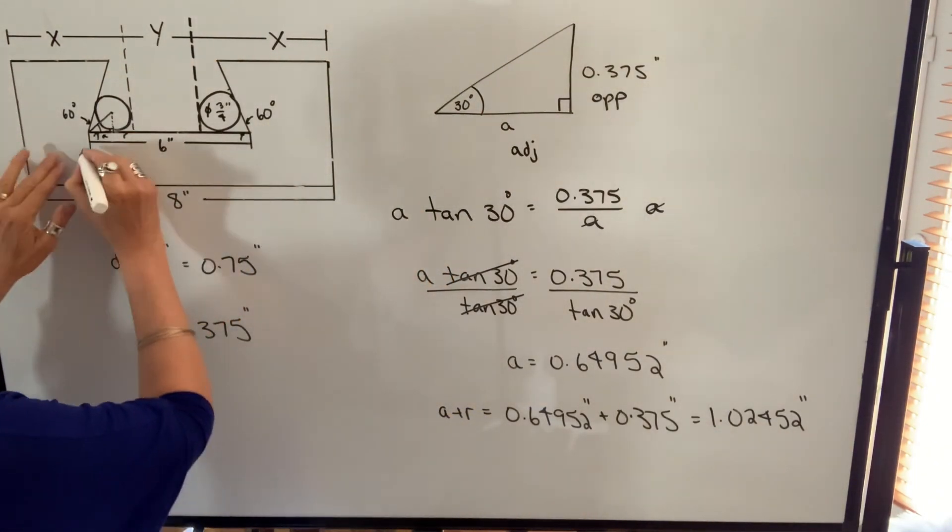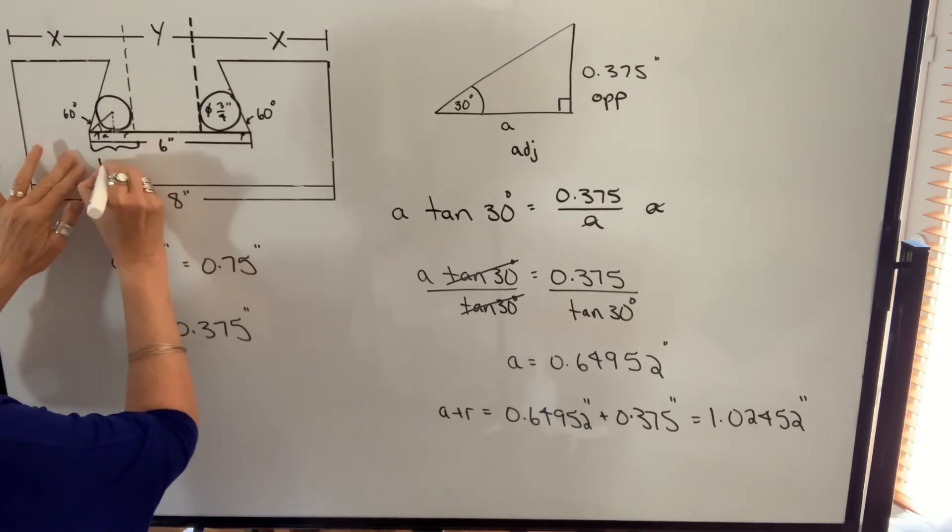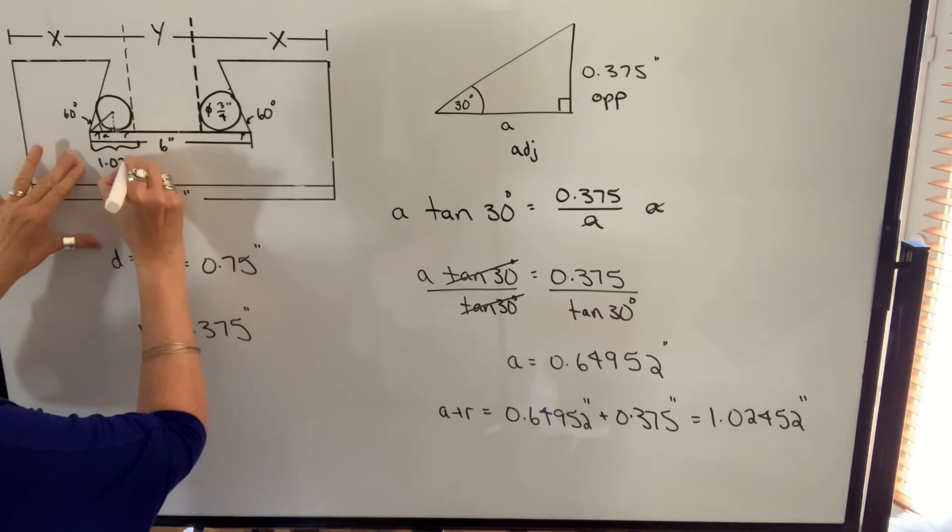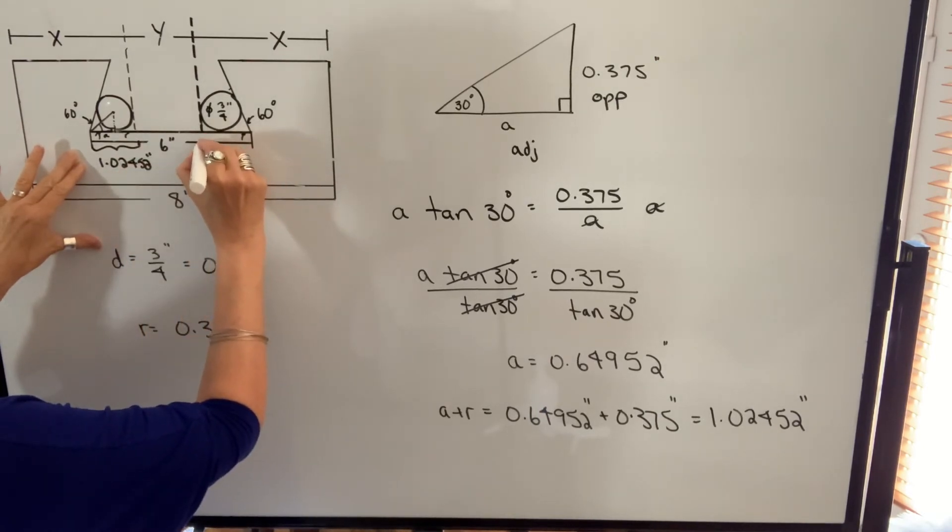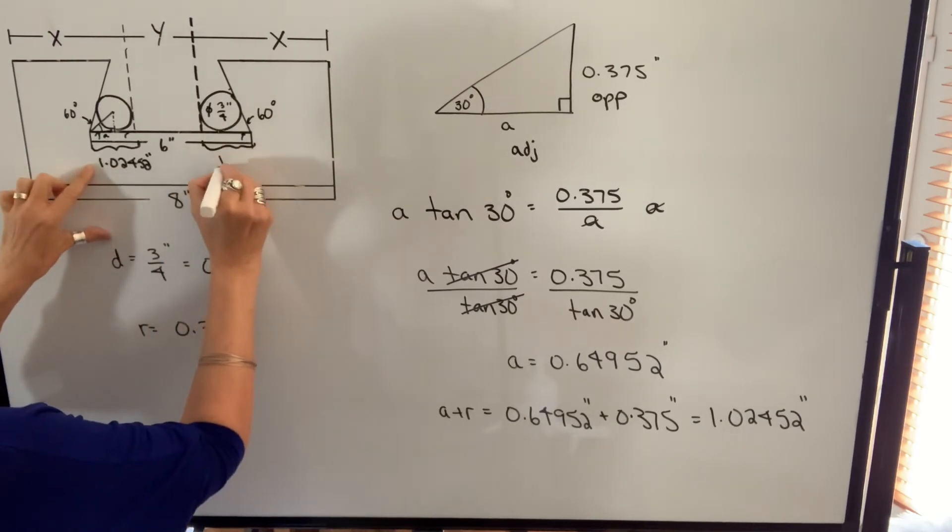So this length here, from here to here, will be 1.02452 inches. This is going to be exactly the same. That is going to be A, that's going to be radius. So this distance here is going to be 1.02452.